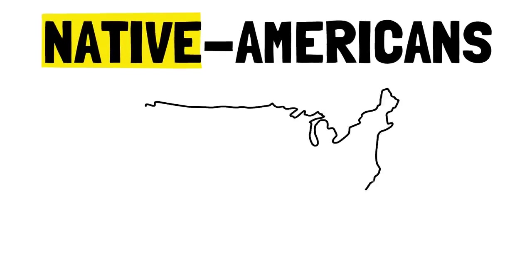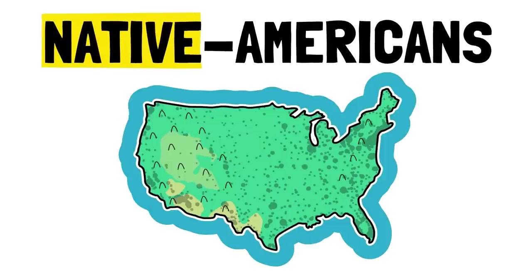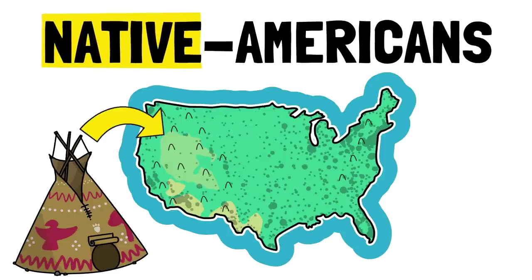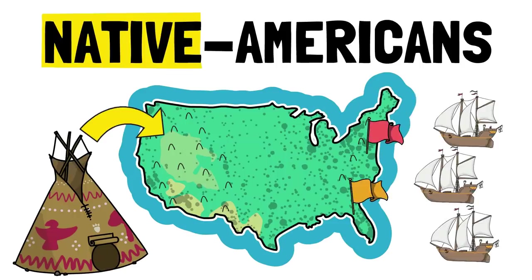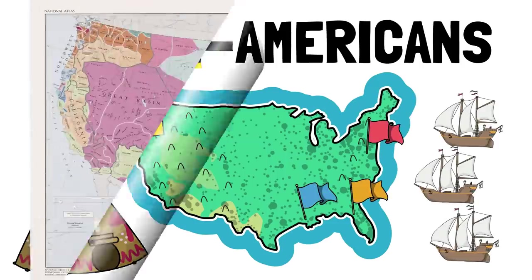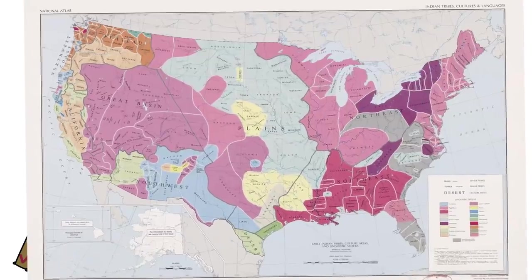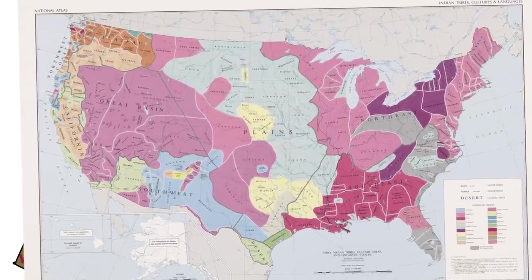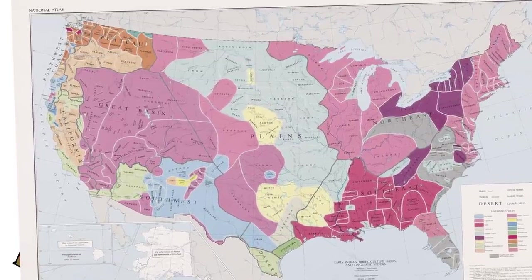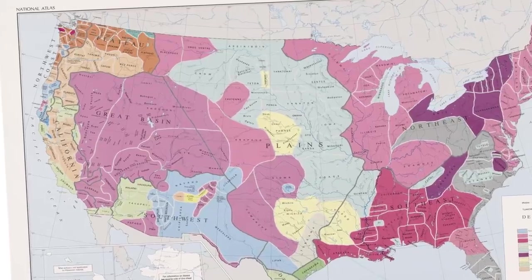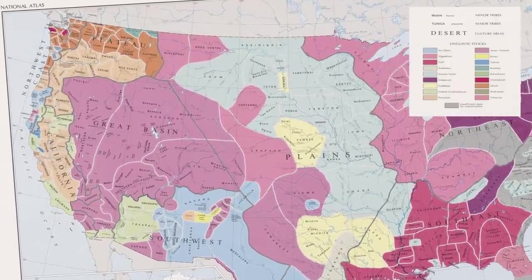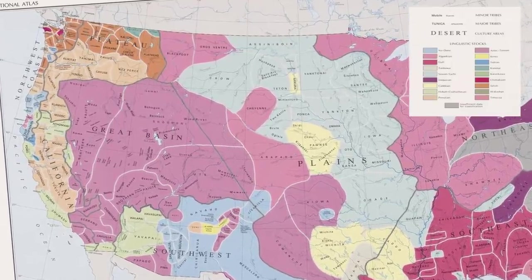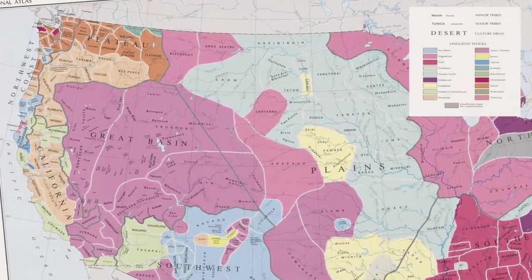Native Americans, the people who lived on the land where the United States of America now exists, before Europeans arrived and began colonizing it. In this map, made in 1991 but referring to pre-colonization times, we can see the continental United States and the main language and cultural groups of the natives that inhabited those lands.